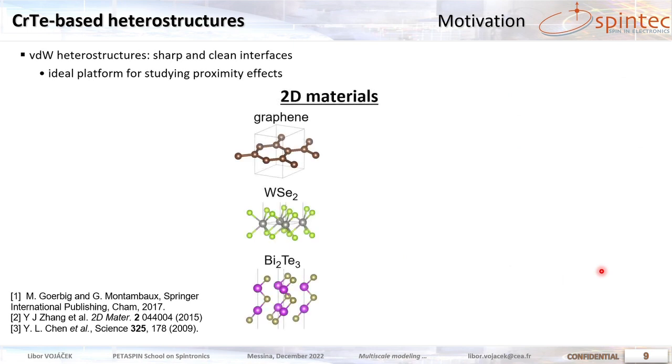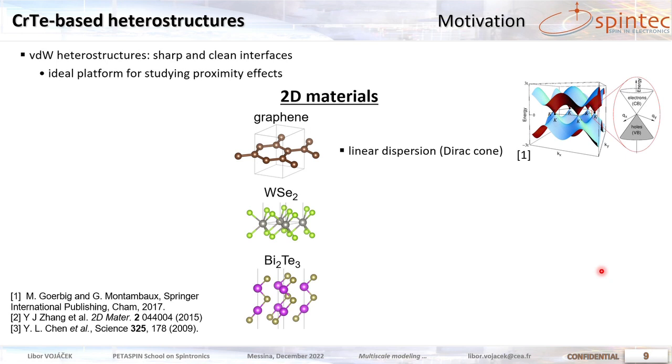So they can experimentally grow and we can also build heterostructures on top of different 2D materials. The interfaces are very sharp and this allows for stunning proximity effects in these 2D materials induced by the magnetic chromium telluride.